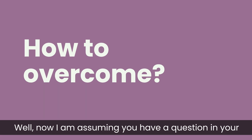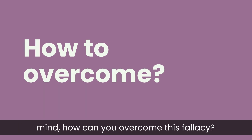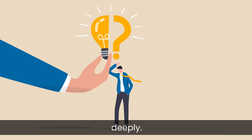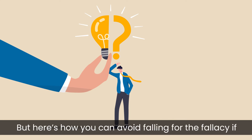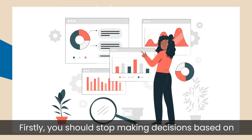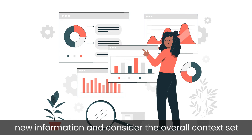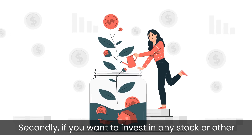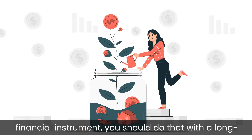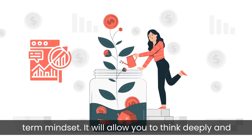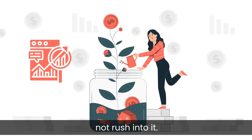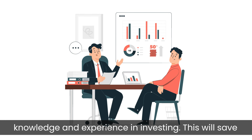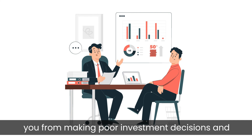How can you overcome this fallacy? This fallacy results from an inbuilt human nature of making decisions in haste and without thinking deeply. But here is how you can avoid falling for it if you are an investor or a trader. Firstly, you should stop making decisions based on just the latest information and consider the overall context set by past data. Secondly, if you want to invest in any stock or other financial instrument, you should do so with a long-term mindset — it will allow you to think deeply and not rush into it. Finally, if you do not have much investing experience, you can consider consulting someone with ample knowledge and experience in investing. This will save you from making poor investment decisions and costing you money.